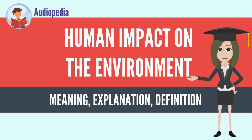Modifying the environment to fit the needs of society is causing severe effects, which become worse as the problem of human overpopulation continues. Some human activities that cause damage either directly or indirectly to the environment on a global scale include human reproduction, overconsumption, overexploitation, pollution, and deforestation, to name but a few. Some of these problems, including global warming and biodiversity loss, pose an existential risk to the human race, and overpopulation causes those problems.